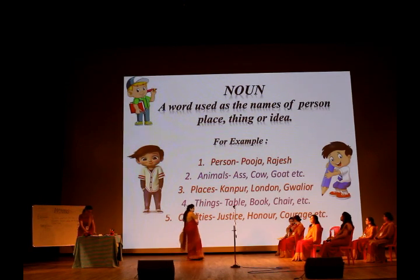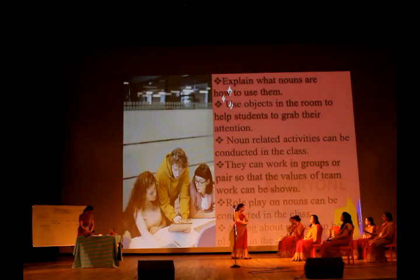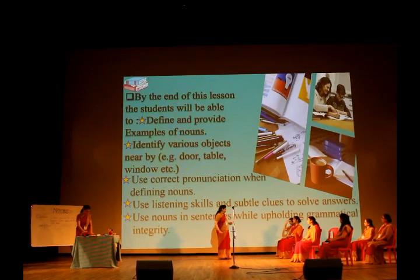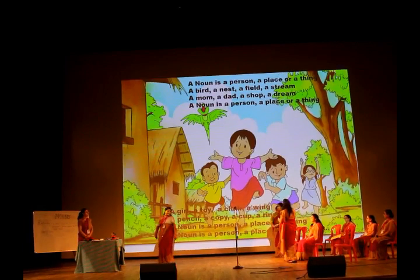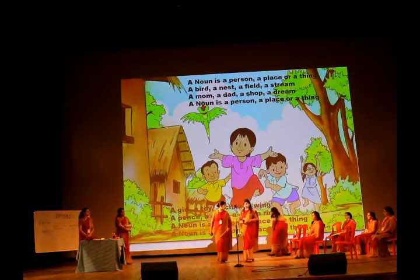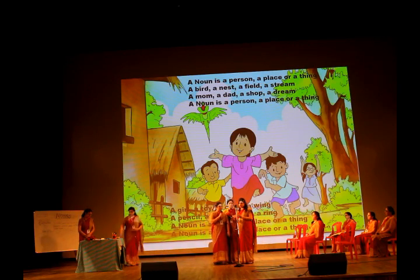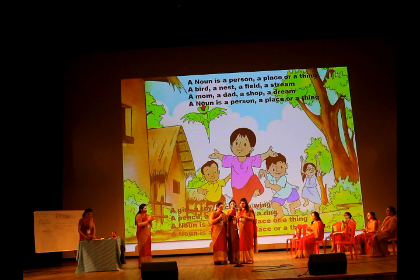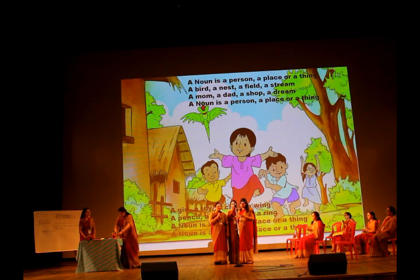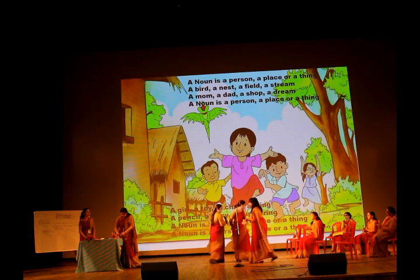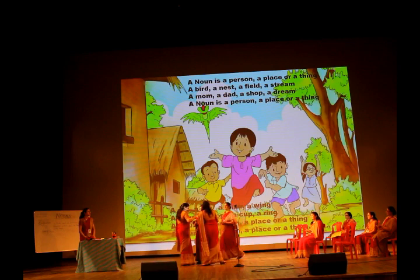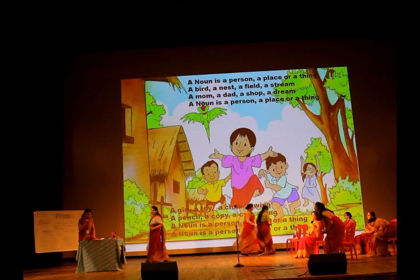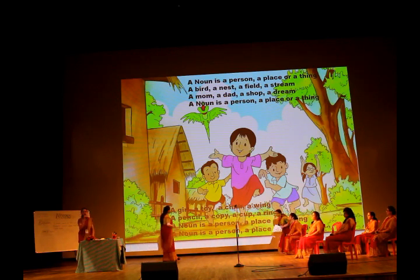So, I have taught you a poem on nouns in your last session. Who remembers the poem? Come forward and recite it. Students recite: 'A noun — a person, a place or a thing. A novel, a nest, a field, a mom, a dad, a shop. A noun is a person, a place or a thing — a girl, a toy, a chair, a wing, a pencil, a copy, a cup.' Poem recitation helps in developing rhythm and retention skills, and also develops self-expression.